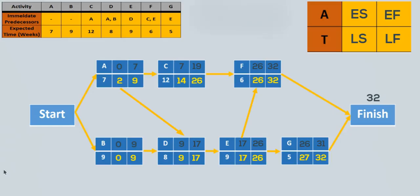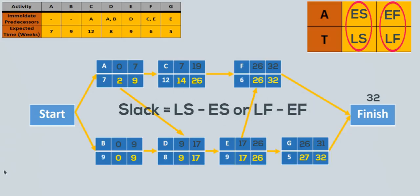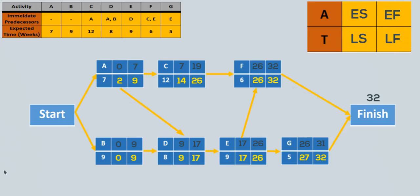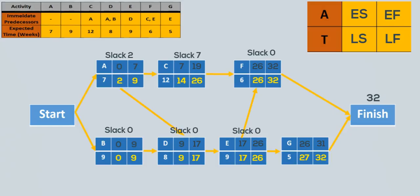The slack for an activity is defined as how long the activity can be delayed without extending the project's completion time, and it is calculated as LS minus ES, or LF minus EF. So the slack for A will be 2 minus 0, or 9 minus 7, which is 2. The slack for B will be 0, for C it will be 7, for D is 0, for E is also 0, for F is also 0, and for G is 1. For example, activity C can begin anytime between week 7 and 14, and it can finish anytime between 19 and 26. Thus C can be delayed for up to 7 weeks and the project will still be completed in week 32.